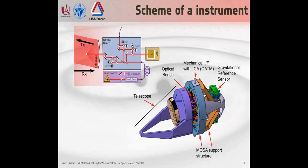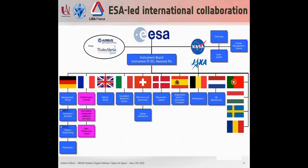LISA is an ESA-led international collaboration with many contributors, mostly in Europe, but also with a junior partnership with NASA, which provides the telescope, part of the charge management system, and the laser assembly. In Europe, Germany is the principal investigator managing the collaboration, and France has a central role in integrating and testing the instrument, as well as developing the on-ground data processing center.